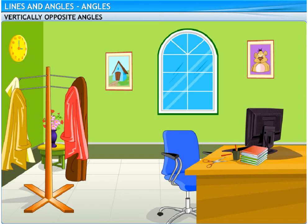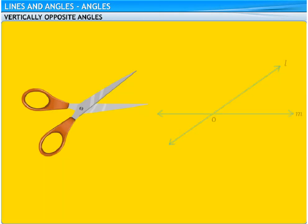What a nice pair of scissors Tom has. Can you see the four angles in this scissors? Let's name these angles as 1, 2, 3 and 4. We can see that angle 1 is vertically opposite to angle 3 and angle 2 is vertically opposite to angle 4. So, angles 1 and 3 and angles 2 and 4 are known as a pair of vertically opposite angles.